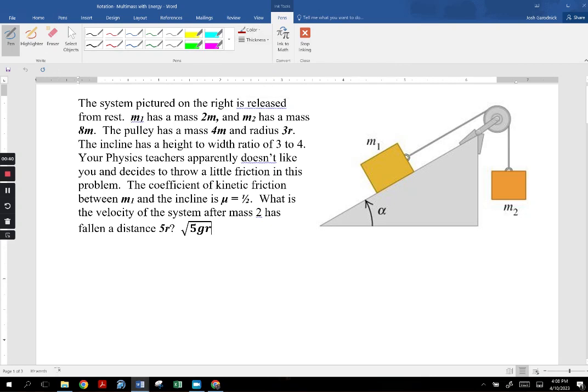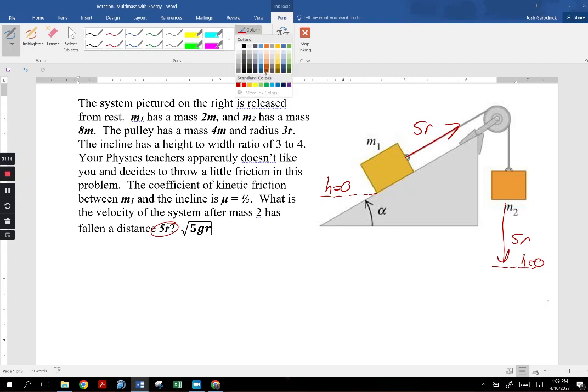So here we go. The first thing that I personally do is to define two different heights of zero, and it says that the system here is going to move a distance of 5r. It says it right there. So this is going to slide down here a distance of 5r. So I'm going to call this height zero, because for me, that's the lowest point of its path. This mass here is going to slide up a distance of 5r, so it's going to go this way, a distance of 5r.